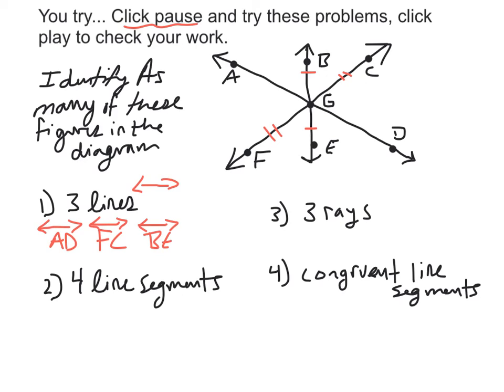Number two, can you identify four line segments? Remember a line segment doesn't go on in either direction forever. It just goes from one point to another. So I could do line segment AD. I could do line segment GD. FC would be another line segment. How about BG? And there are many more line segments in here. Hopefully you can figure out that you've picked two points and used the correct symbol over it.